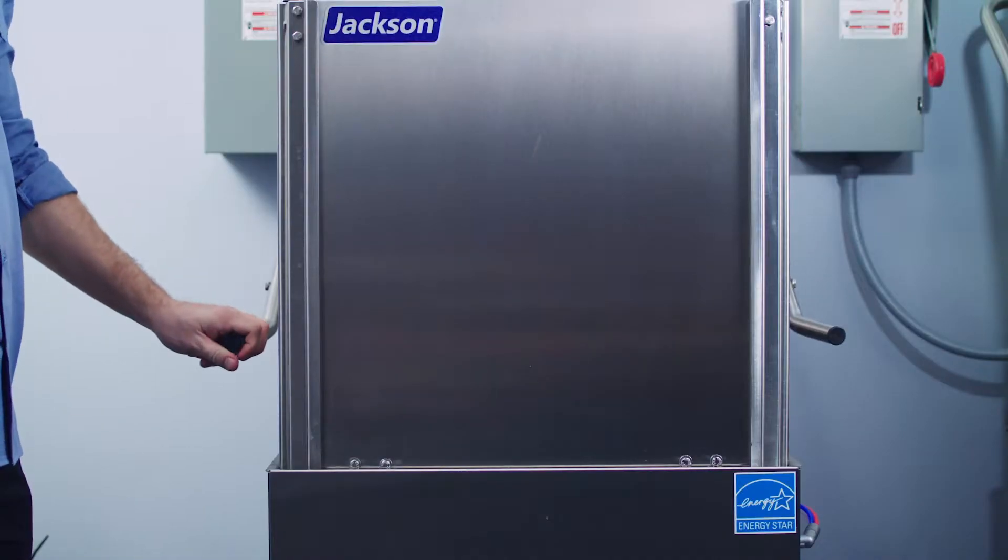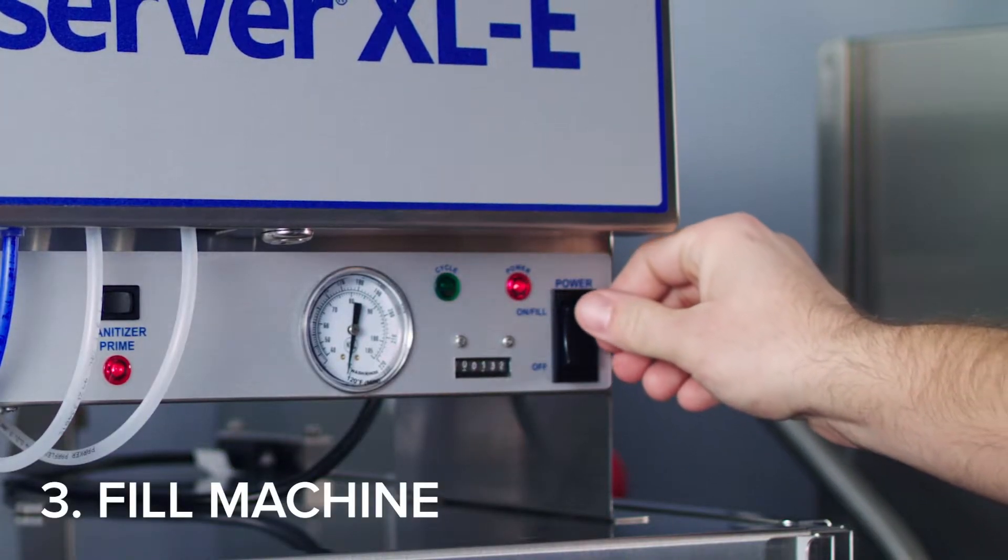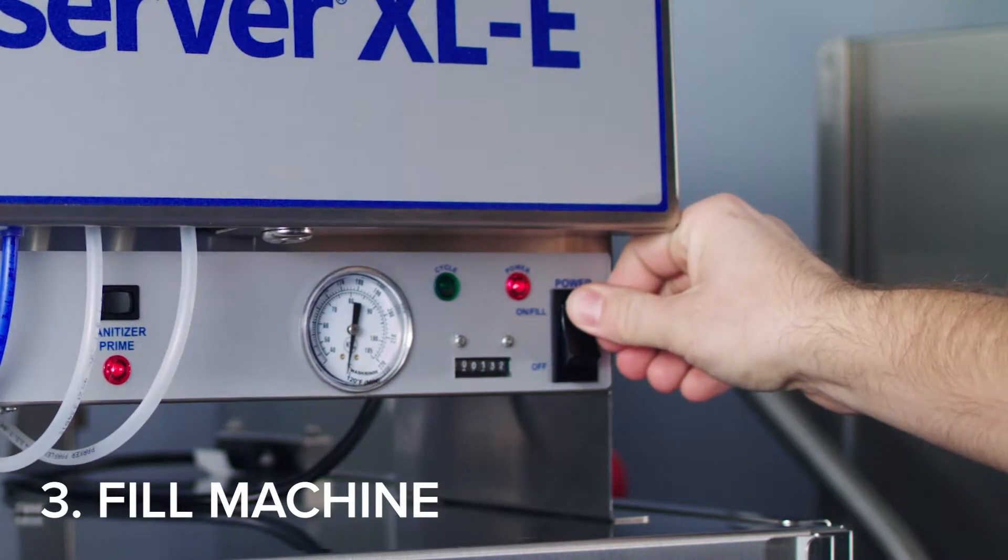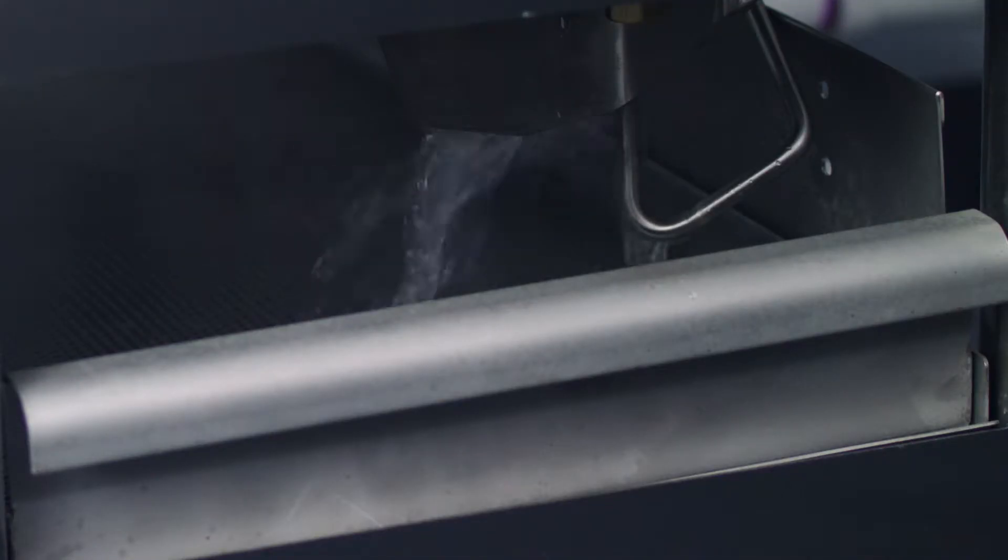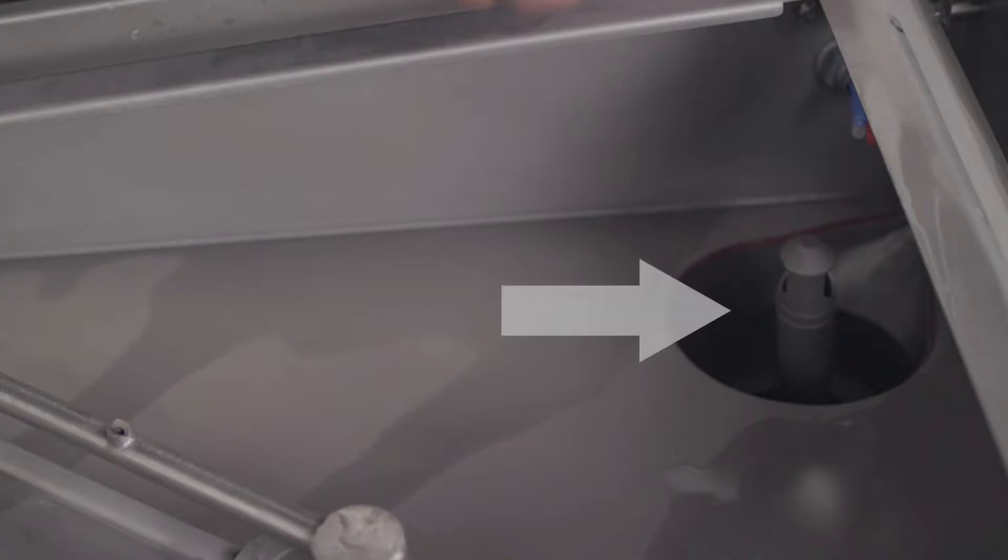Close the door, power the unit on, then press and hold the switch in the fill position for 8 to 10 seconds. For proper operation, the water level must reach between the lines marked on the drain stopper.